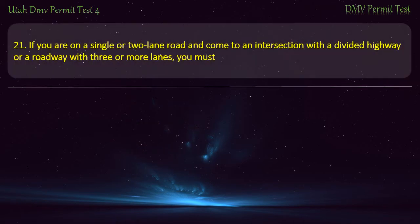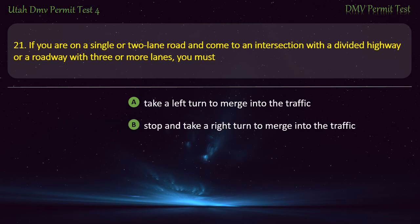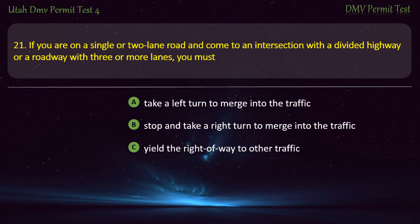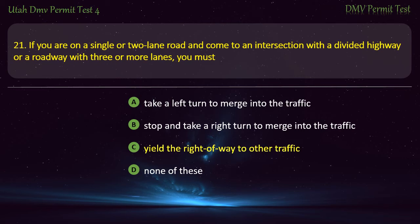Question 21. If you are on a single or two-lane road and come to an intersection with a divided highway or a roadway with three or more lanes, you must: Take a left turn to merge into the traffic; Stop and take a right turn to merge into the traffic; Yield the right of way to other traffic; or None of these? Answer: Yield the right of way to other traffic.